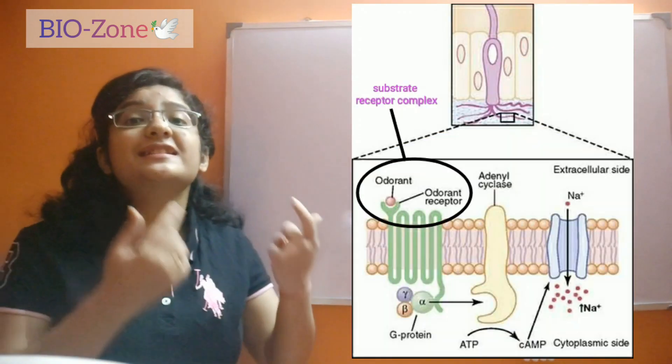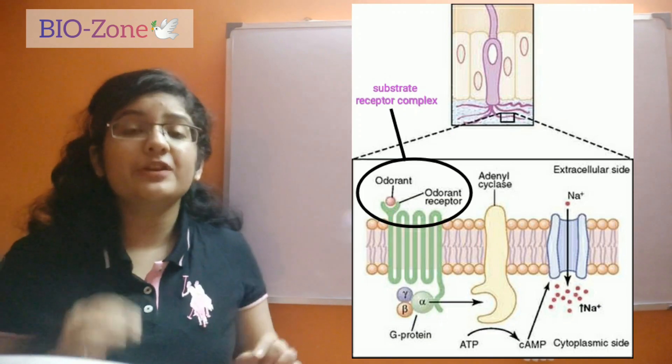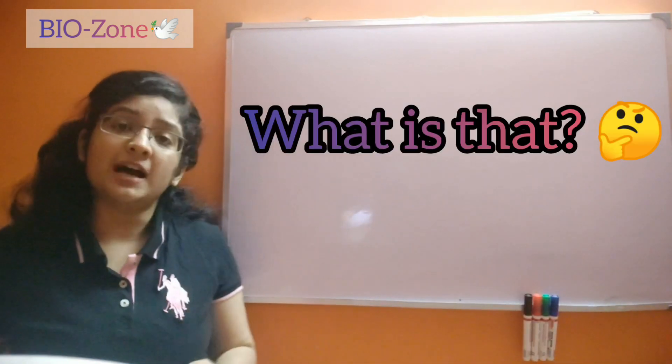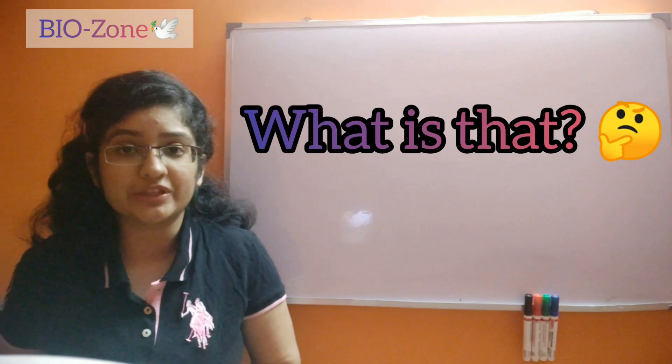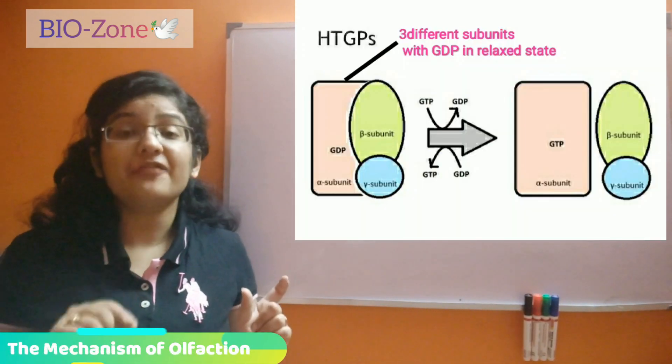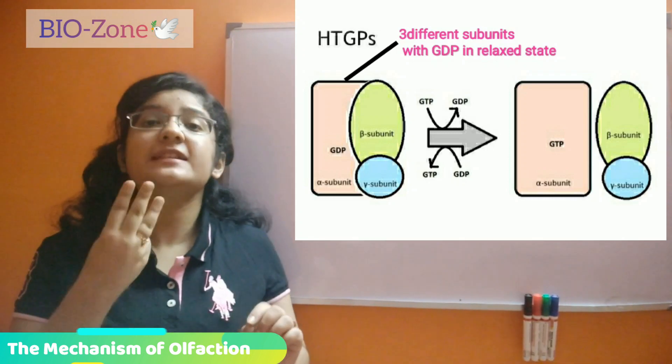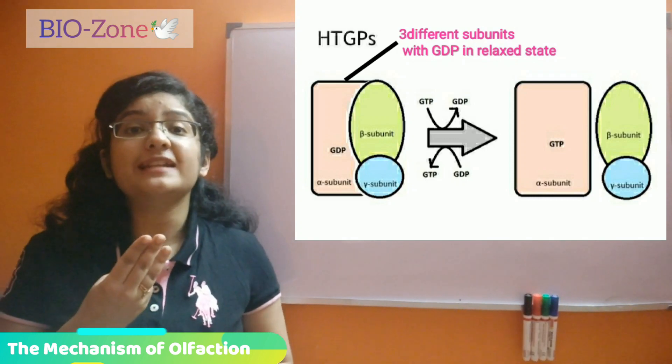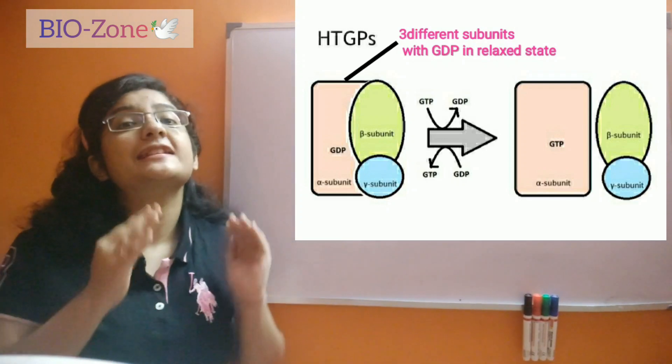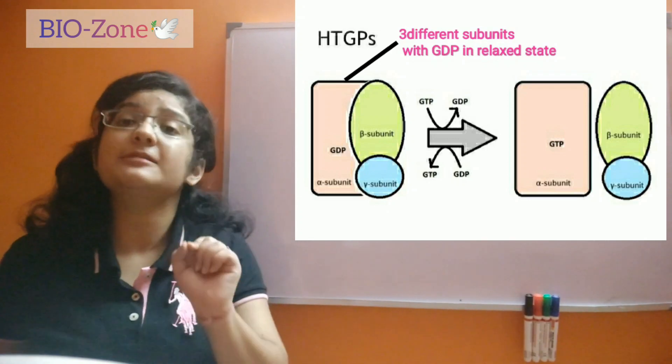Now whenever this substrate receptor complex is activated, it causes the activation of heterotrimeric G proteins. Now what is a heterotrimeric G protein? Hetero stands for any component that has different subunits. Now this G protein has three different subunits: alpha, beta, and gamma subunits. When it is in the resting condition, these G proteins remain bound with GDP.